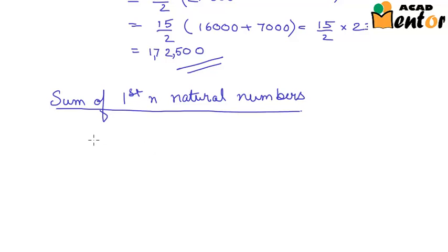Let's take another example. If we are to add the first n natural numbers, we would have 1 plus 2 plus 3 plus so on up to n. Now what would be this sum? This would be nothing but Sn would be equal to n by 2 into the first term, that is 1 plus the last term, that is n.